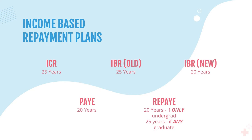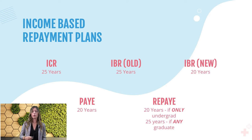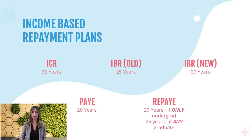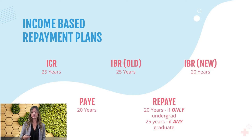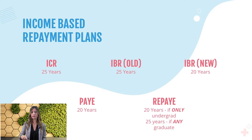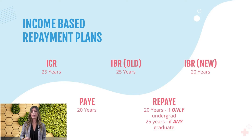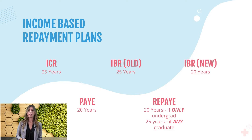Before we get into the example, here's what these income-based repayment plans look like. All of these have been executive orders, and there are five different repayment plans currently. The biggest three are the new IBR, the PAYE, and the REPAYE. The only real differences are the loan repayment terms and how much income is calculated for your monthly payment.